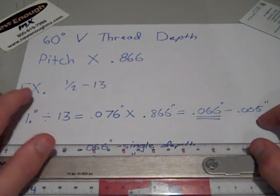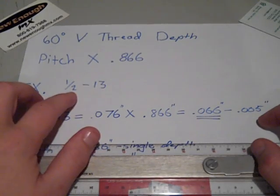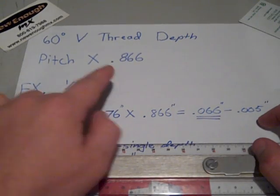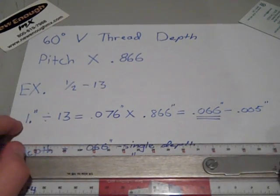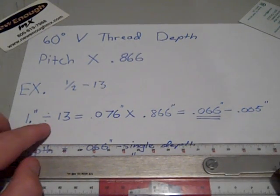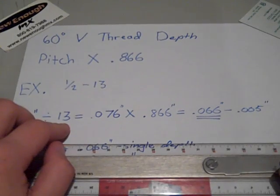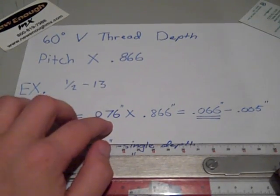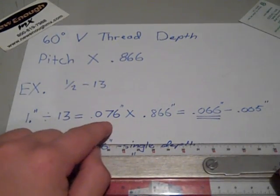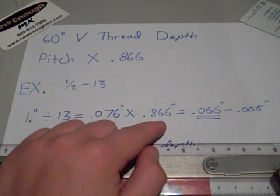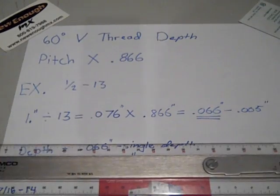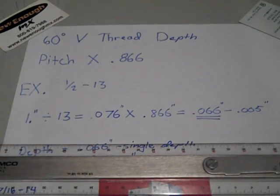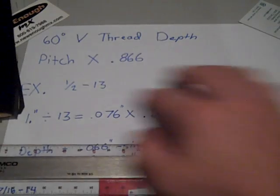An example is half-13. So you're gonna cut a half inch bolt with a 13 pitch. All you do is take one inch divided by 13, which is your pitch, equals 0.076. Multiply that by 0.866, which equals 0.066 inches or 66 thousandths, that's your depth. I also wrote on here minus 5 thousandths from this dimension.